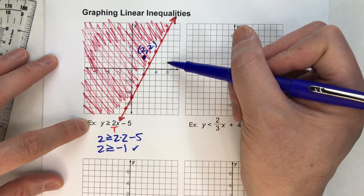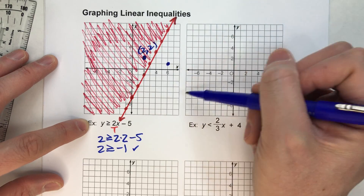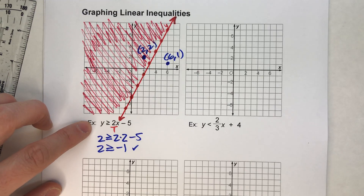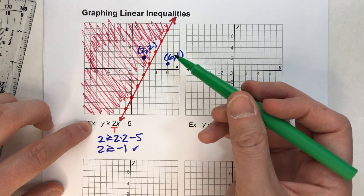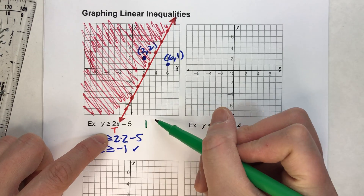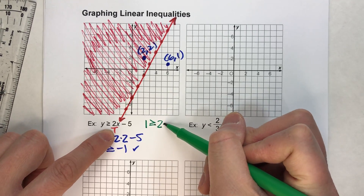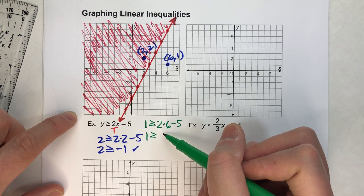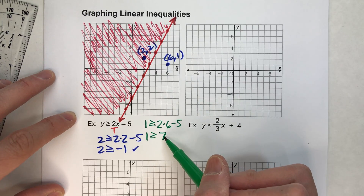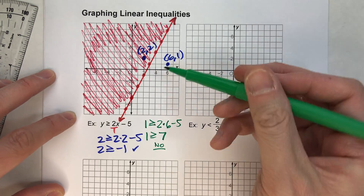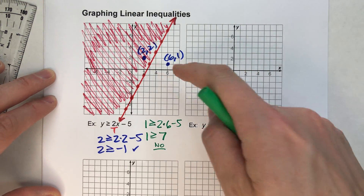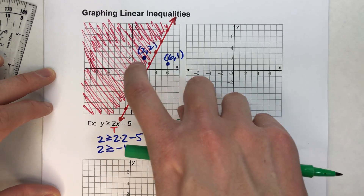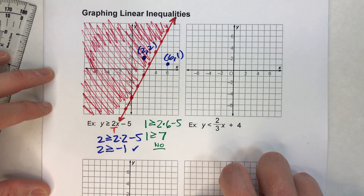Let's say I picked another point in the non-solution section — that's 6, 1. If I put that into my inequality, I should make a false statement. Y is 1. Is 1 greater than or equal to 2 times x, which is 6, minus 5? 2 times 6 is 12, minus 5 is 7. Is 1 greater than or equal to 7? Nope. So I know that's not part of my solution. By testing one point in the non-shaded region and one in the shaded region, I can be assured that I shaded the correct side.